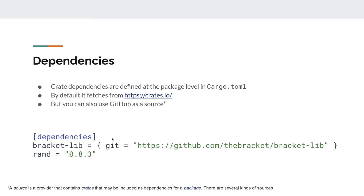In the cargo.toml file under the dependencies section, if you want to pull from GitHub you give the dependency name, say `git =` and paste the link to the git repo — that repo needs to have a cargo.toml that Cargo will recognize. If you just want to source it from crates.io you specify the crate name and the version; you don't have to specify all three version parts.